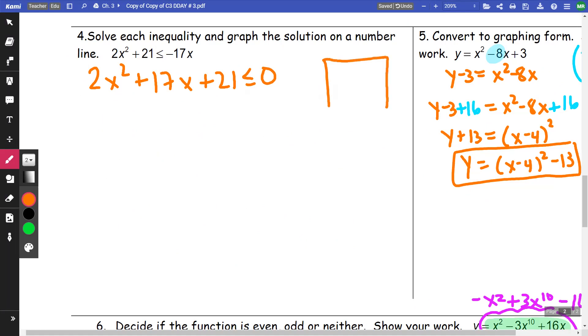Then I want to do a box and diamond. I have my 2x squared and my 21, which multiplies and gets me a 42x squared, has to add to my 17x. So that's a 42x squared. I think I was thinking of it as a 72x squared the other day.